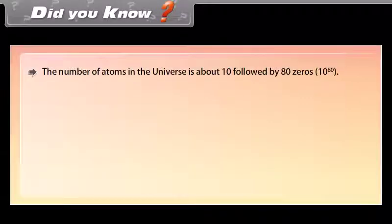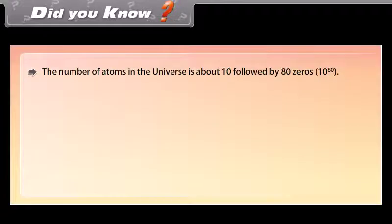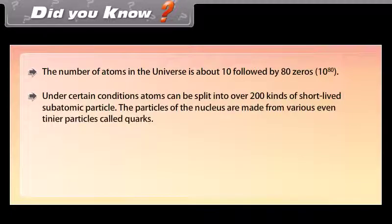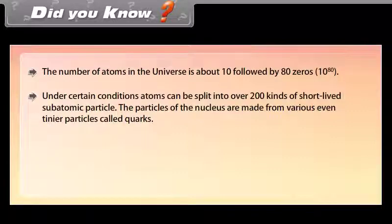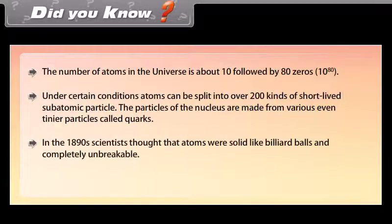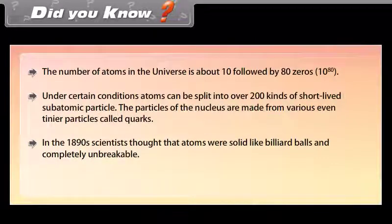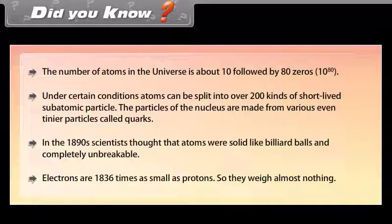The number of atoms in the universe is about 10 followed by 80 zeros. Under certain conditions, atoms can be split into over 200 kinds of short-lived sub-atomic particles. The particles of the nucleus are made from even tinier particles called quarks. In the 1890s, scientists thought that atoms were solid like billiard balls and completely unbreakable. Electrons are 1836 times smaller than protons, so they weigh almost nothing.